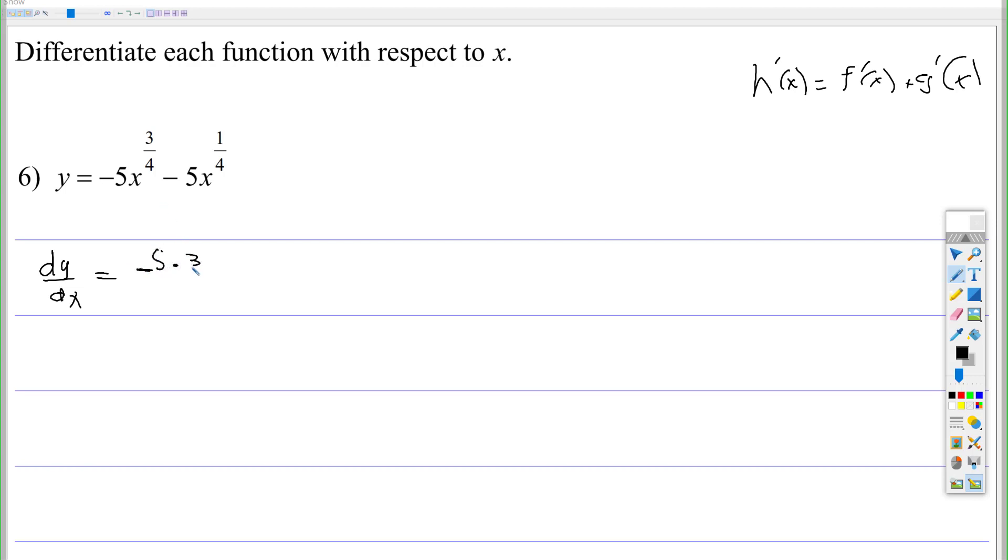That's 3 fourths x, and then 3 fourths subtract 1, or subtract 4 over 4 is negative 1 fourth. Now notice the 3 fourths doesn't have the negative 1 fourth, it's just the x, alright?